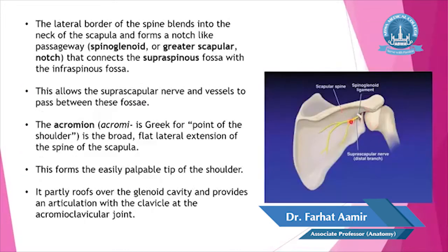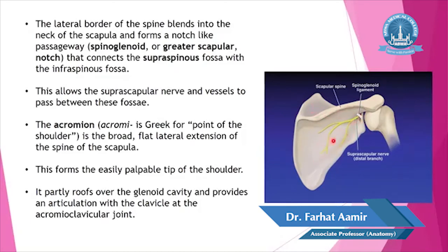The lateral border of the spine blends with the neck of the scapula to form a passageway called the spinoglenoid notch, or greater scapular notch, between the glenoid cavity and the spine. This notch connects the supraspinous fossa above and infraspinous fossa below, allowing the suprascapular nerve and vessels to pass between these fossae.